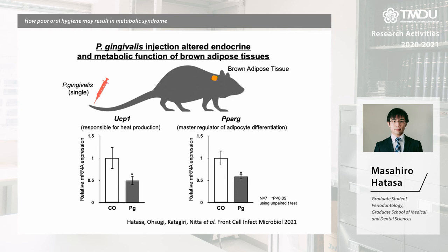PPARγ, a master regulator of adipose cell differentiation, was also downregulated after P. gingivalis injection. This result indicates that P. gingivalis injection altered endocrine and metabolic function of brown adipose tissue.